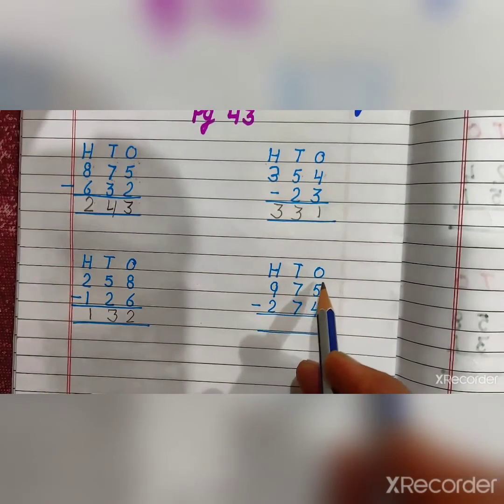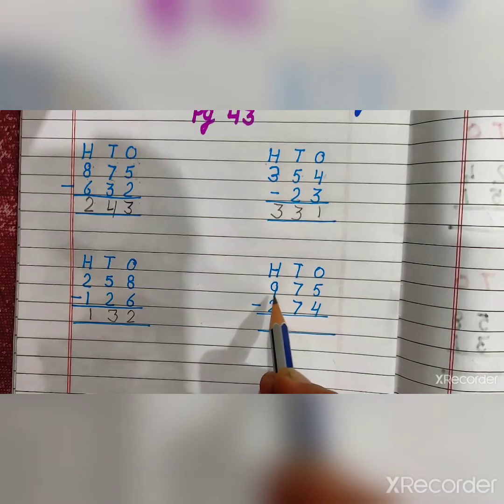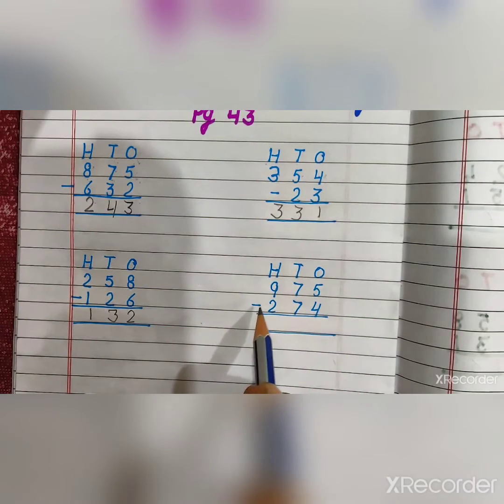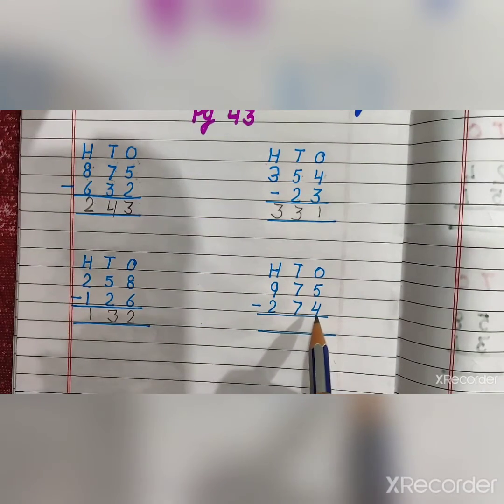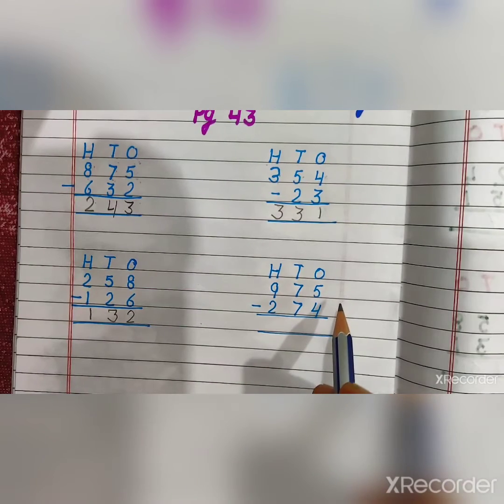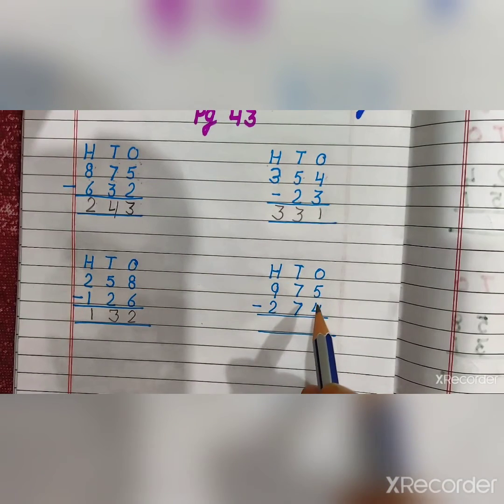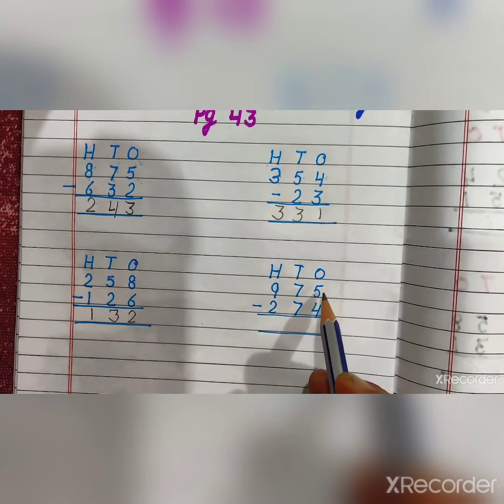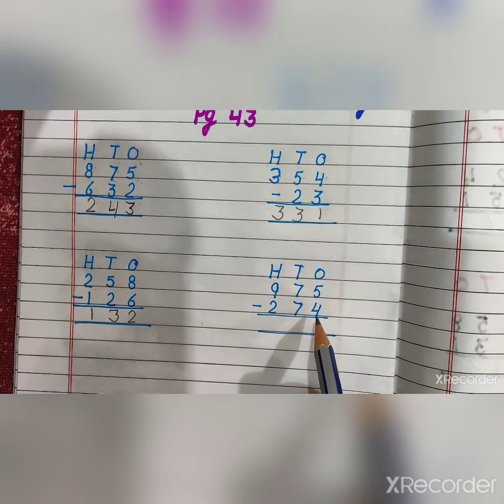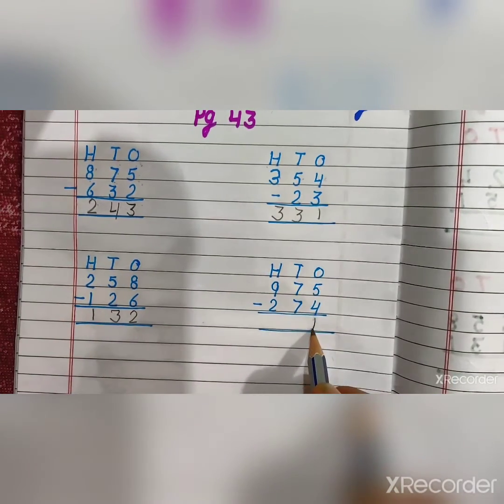And next sum. 975 minus 274. Now we will start with one's place. 5 minus 4 is equal to 1.